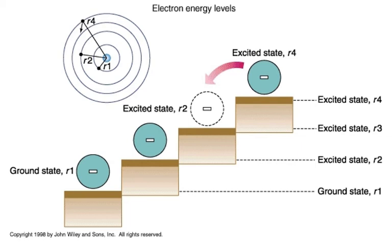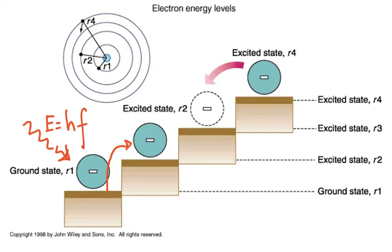For an electron to jump from the ground state to the next state, you need a specific amount of energy. A photon can bombard the electron, but if it doesn't carry the specific energy needed for the electron to jump to a higher excited level, the electron will stay where it is. It doesn't depend on the intensity of the light. You can have a lot of red light with lower frequency that doesn't have enough energy, while ultraviolet or violet light with higher frequency may carry enough energy to move the electron from one energy level to another.